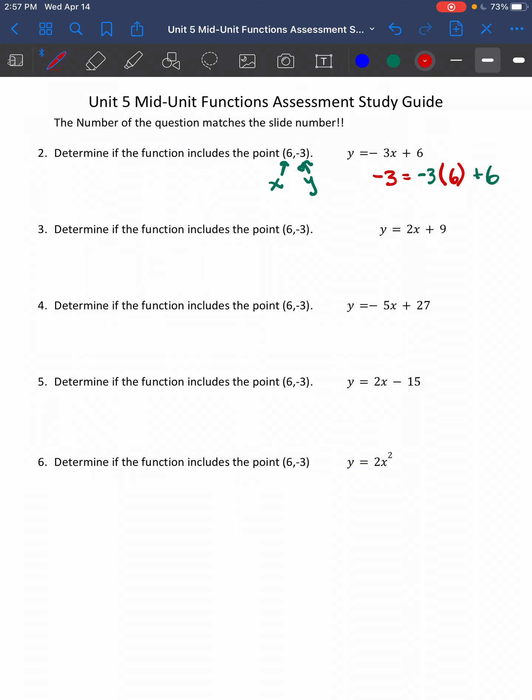So then I have negative 3. I don't do anything to that left-hand side. And then I have to simplify the right side. I know that negative 3 times 6 is negative 18 plus 6. Negative 3 equals negative 12. I know that's false. So the function is not, the point is not included in that function.